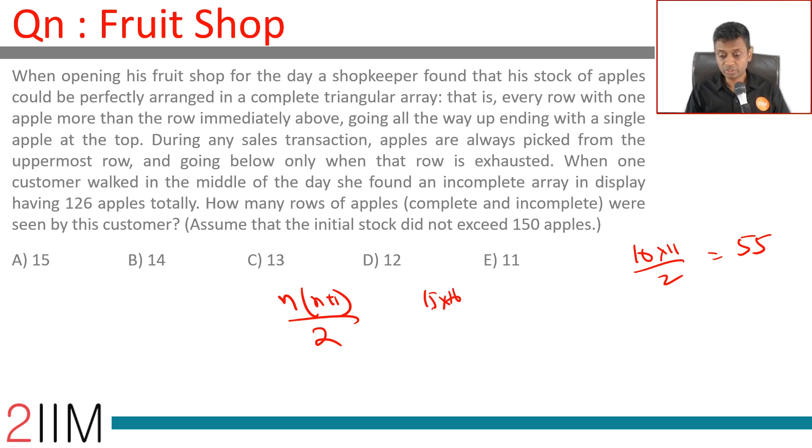Let's do 15 into 16 by 2. 15 into 8 is 120. So 1, 2, 3, 4, 5, all the way till 15 will give us 120 different apples.